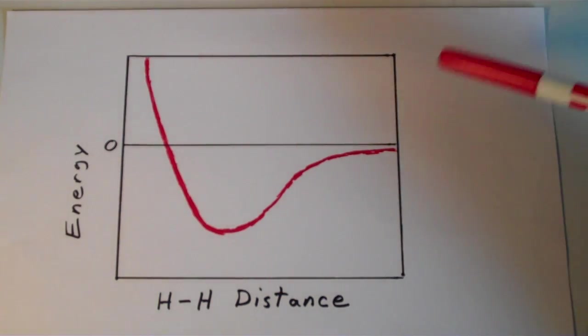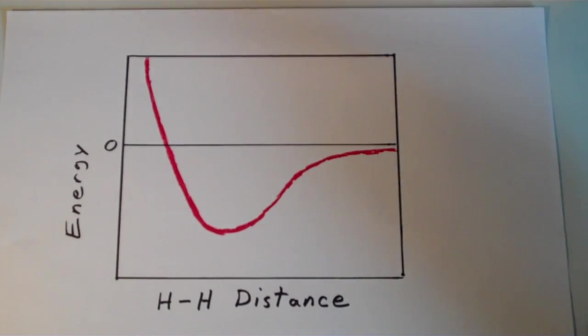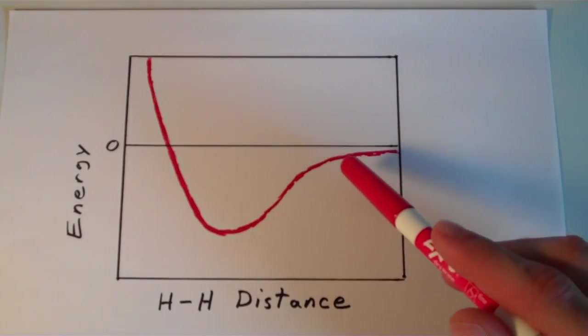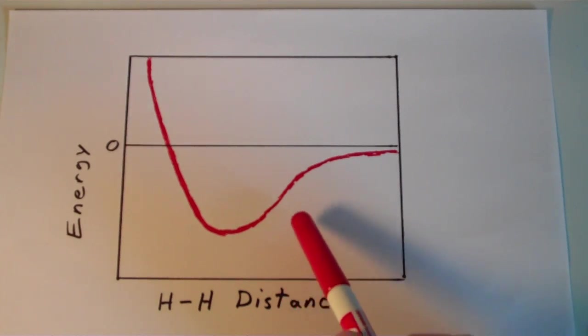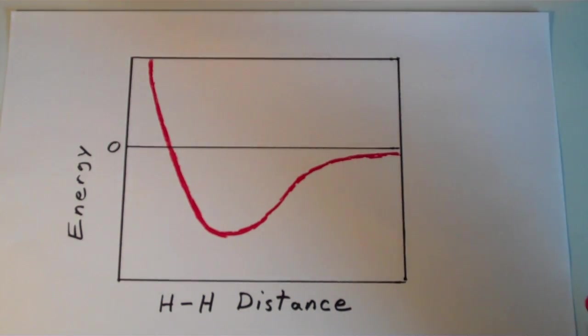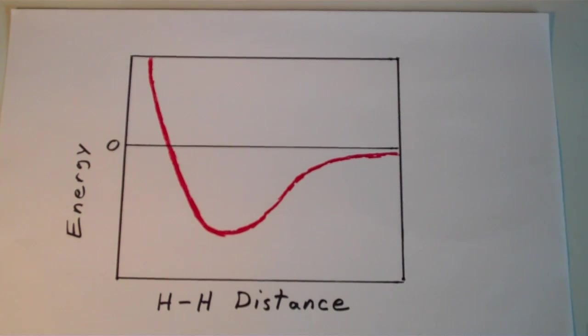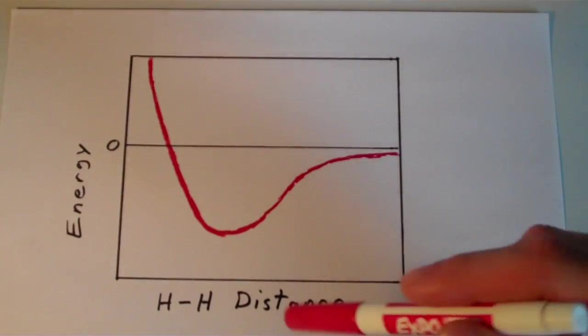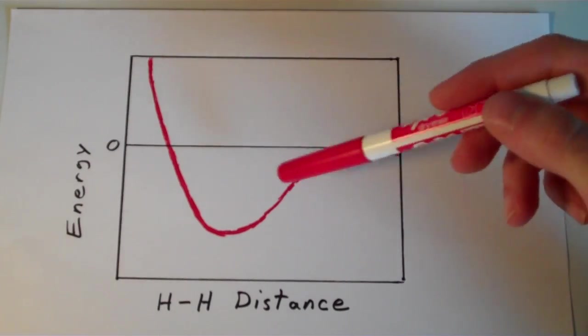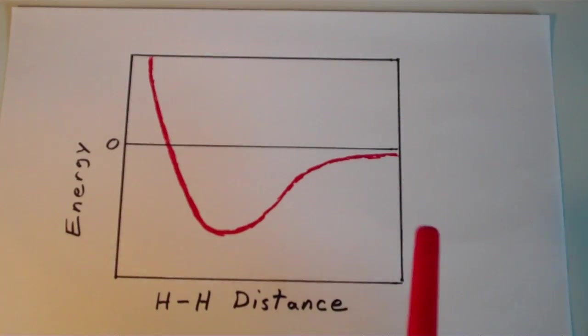So the right hand side of the curve corresponds to when the atoms are fairly far apart. Notice their energy is almost zero because they are too far apart to interact. But as the atoms get closer and closer together, the potential energy decreases and then approaches this minimum. And this minimum value is what we call the bond energy. And the length that corresponds with this minimum bond energy is what we call the equilibrium bond length. Notice that as the atoms get too close together, the nuclei actually repel each other and that corresponds with a sharp increase in potential energy. So there's this happy medium, this equilibrium bond length that corresponds to a minimum in potential energy.